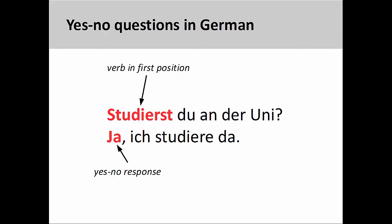Any conjugated verb can appear in the first position, not just some form of sein. For example, in the sentence you see on the screen, studierst du an der Uni, do you study at the university? A second-person singular form of studieren is in the first position, which creates subject-verb agreement with the subject du, second-person singular personal pronoun.